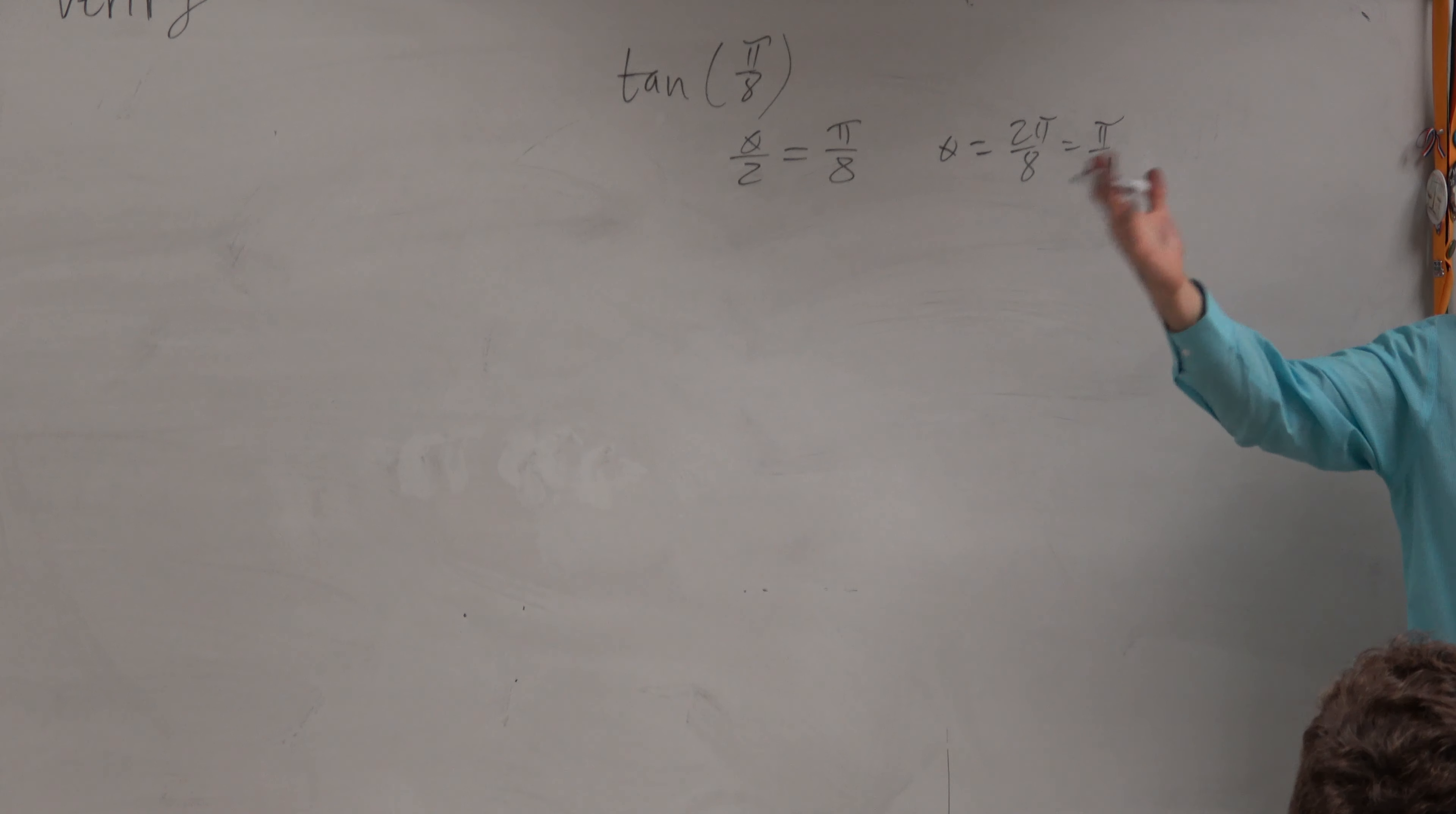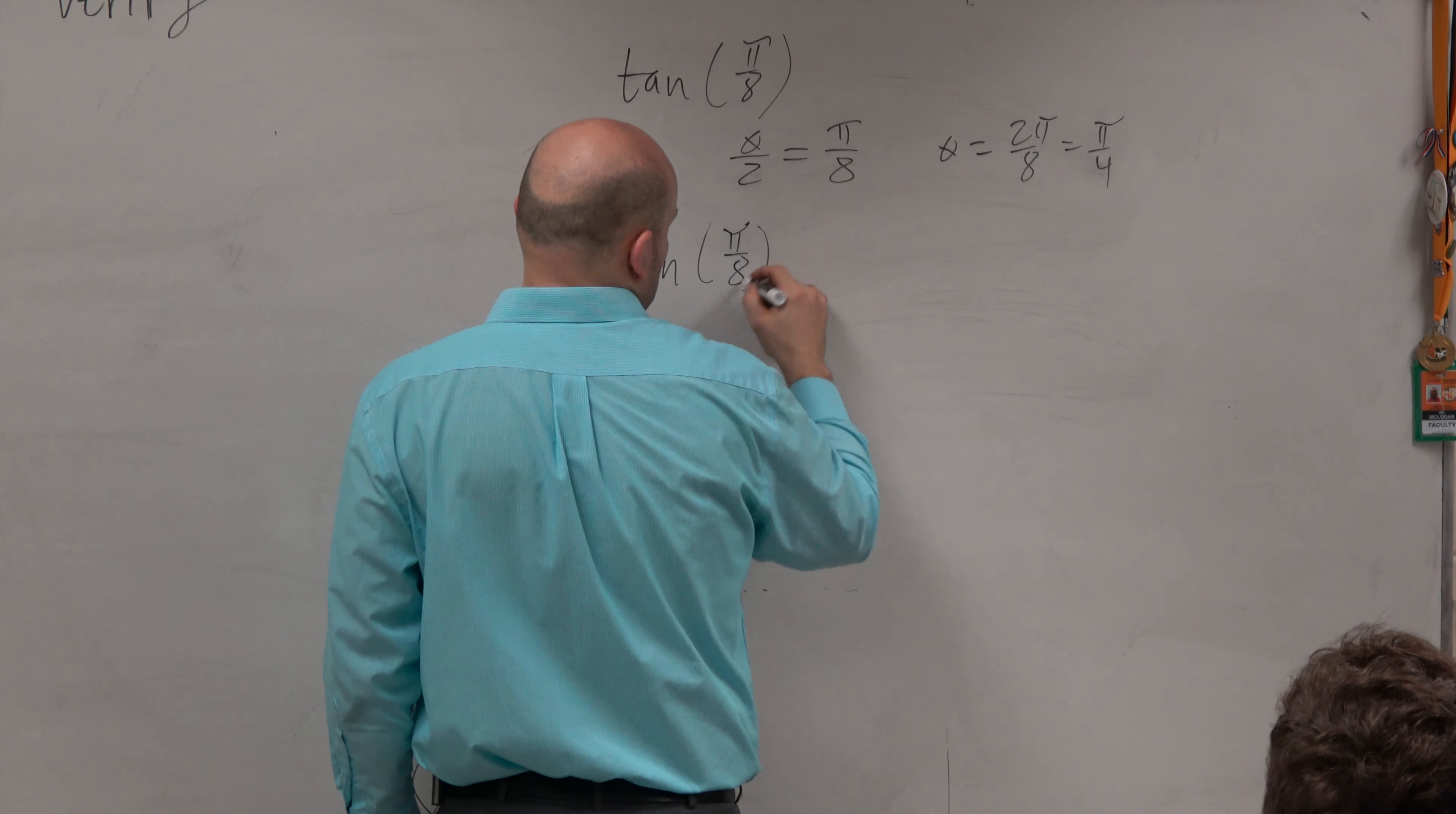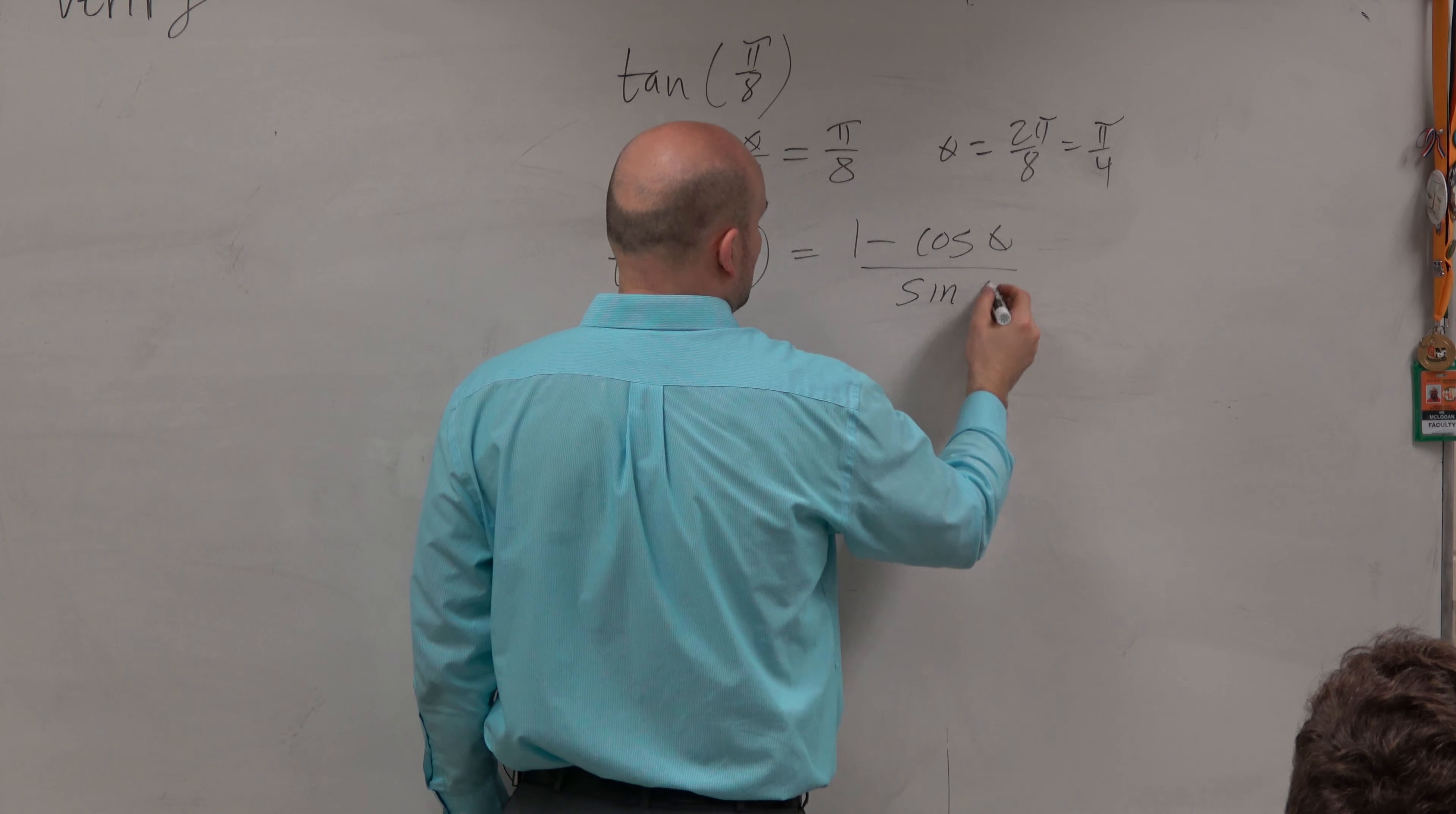Same process that we've been doing. Let's plug in the half angle formula for tangent, one of them, which would be 1 minus the cosine of theta all over sine of theta.